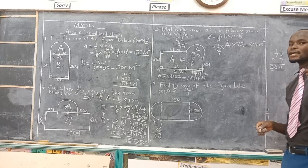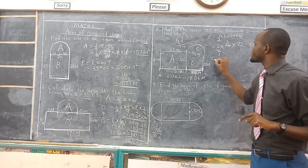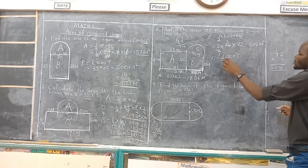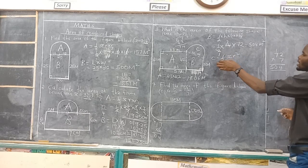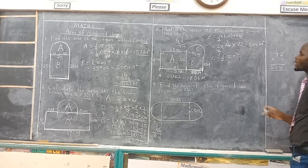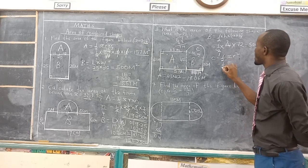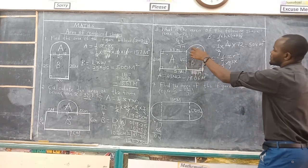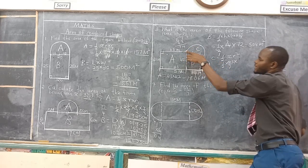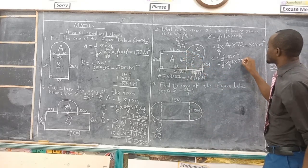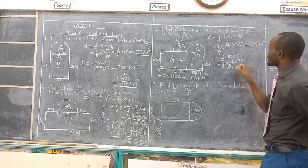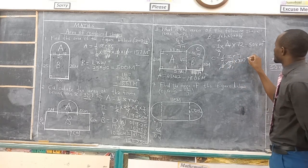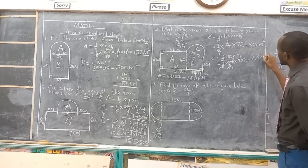Let's go to the next shape, which is a semi-circle. C is half pi r squared. When it is a whole circle you use pi r squared; if it is half a circle, you say half pi r squared. So we have half times 22 over 7 times r squared. What is the radius of this semi-circle? The diameter is 14, so the radius is 7. You multiply 7 times 7 and cancel with the 7 in the denominator, giving 77 meters squared.